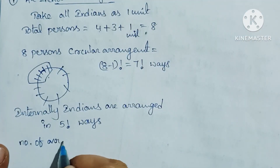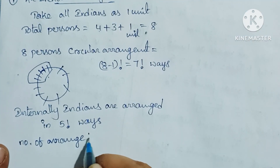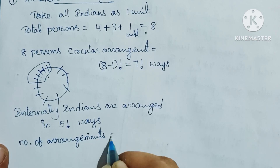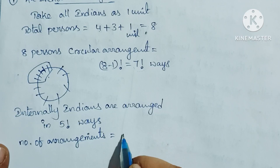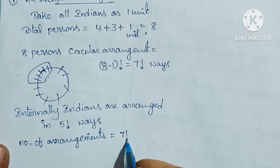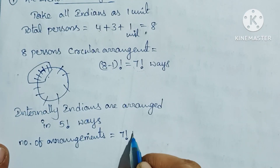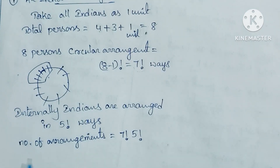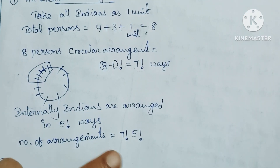So the total number of arrangements when all Indians sit together equals the circular arrangement into the internal arrangement: 7! × 5! ways.